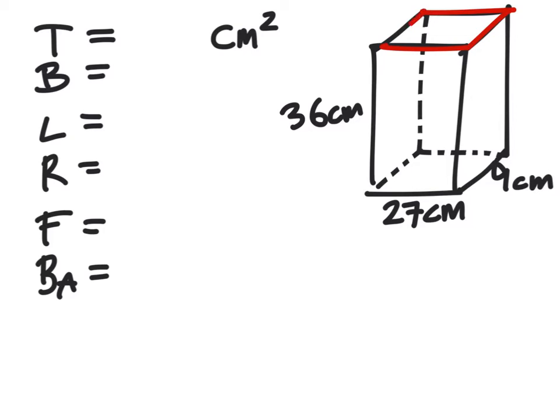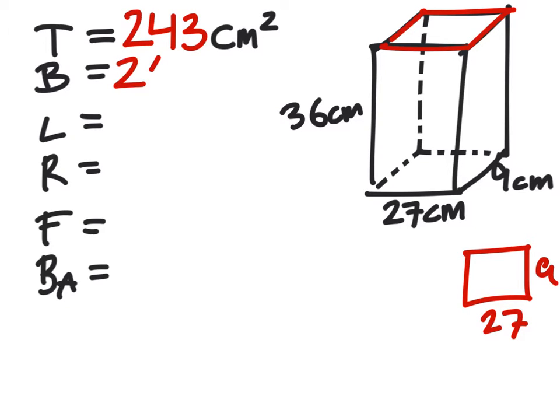We've got this rectangle, which if I draw it, this is now a 9 by 27 rectangle. If I take 9 times 27, that tells me that the top has a surface area of 243 centimeters squared. But since it's a rectangular prism, the bottom also will have the same number of centimeters squared.